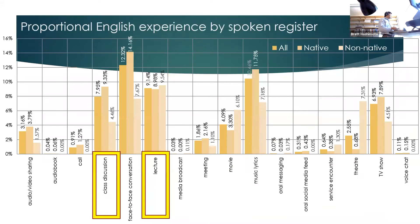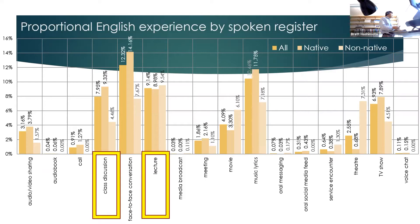Breaking the results down by spoken register, we see a wide variety of registers. The register categories are fairly general, yet we see a wide range of things people are doing with language — which is what we'd expect for university students. This is really the first study that has tried to quantify how much of these different registers we're using on a day-to-day basis.